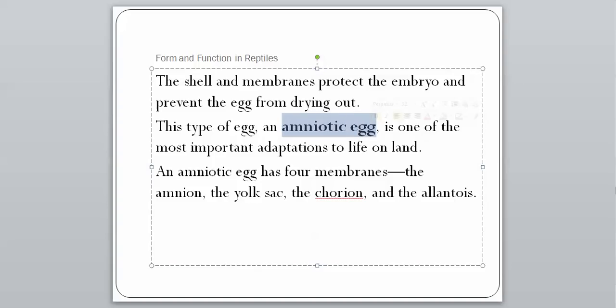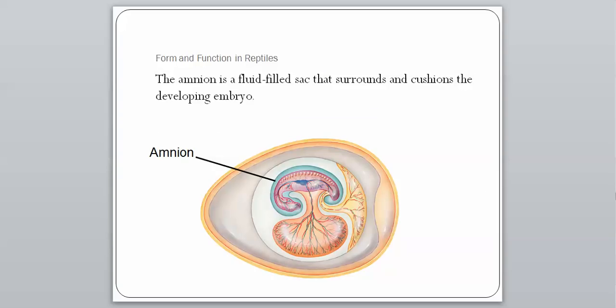This type of egg is called an amniotic egg, and it's one of the most important adaptations to life on land. An amniotic egg has four membranes: the amnion, the yolk sac, the chorion, and the allantois. The amnion is the fluid-filled sac that surrounds and cushions the developing embryo. In this picture, our embryo is the purple structure, and the light blue layer around it is our amnion, filled with fluid to protect the developing embryo.